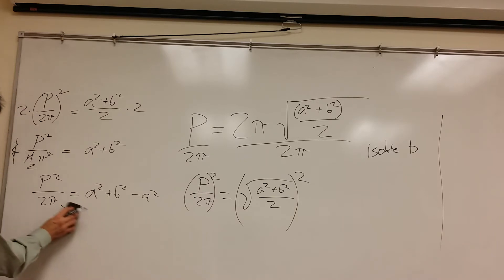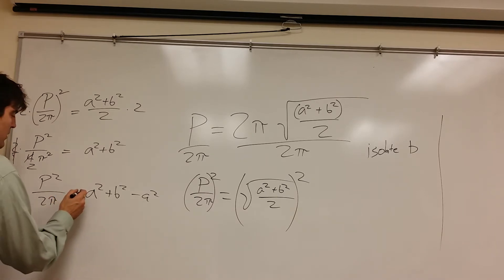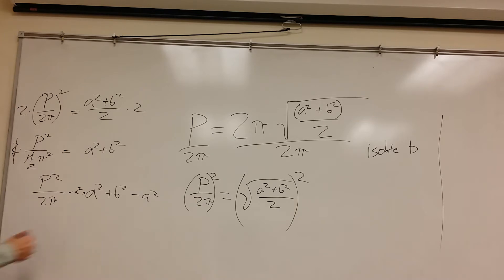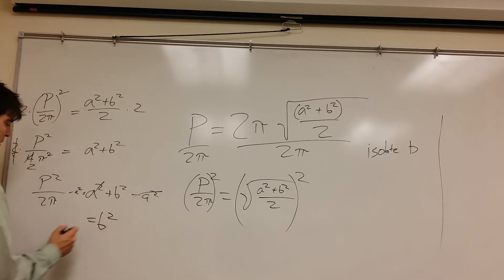I don't like that I had to write that there. Let me fix that. Okay. So those cross out. That's why we did that. B squared equals P squared over 2π.